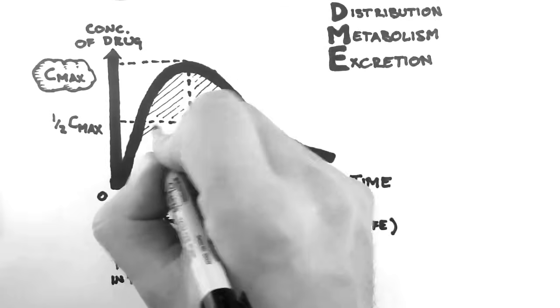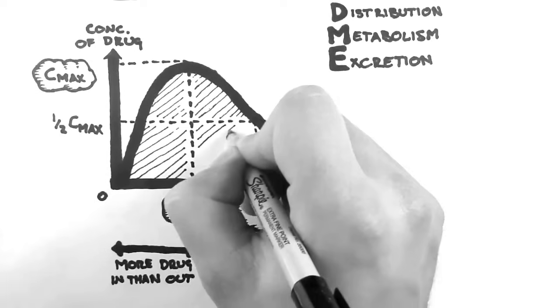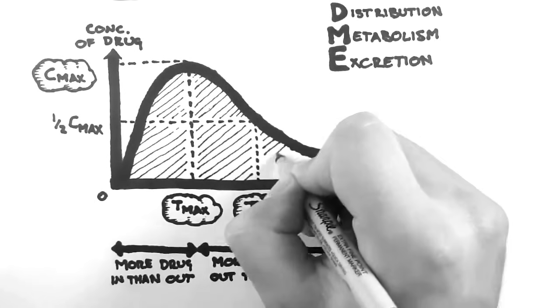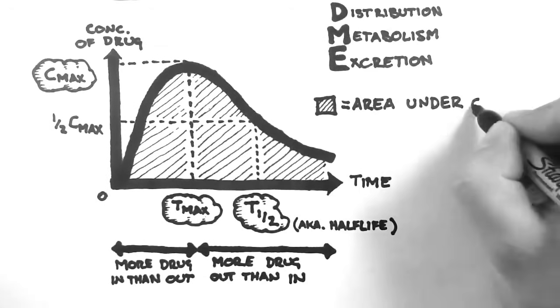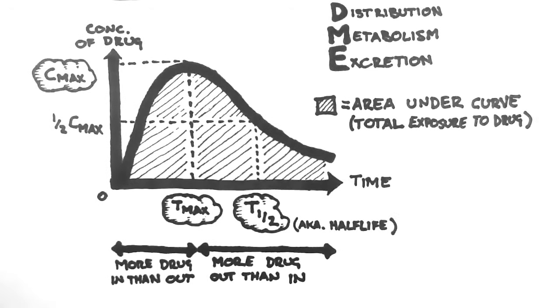The last thing to look at is the area under the curve. And this I have illustrated by shading in the space under the graph. This represents the total exposure to a drug that the body receives. This is a function of how high the concentration of the drug gets, as well as how quickly it's excreted.